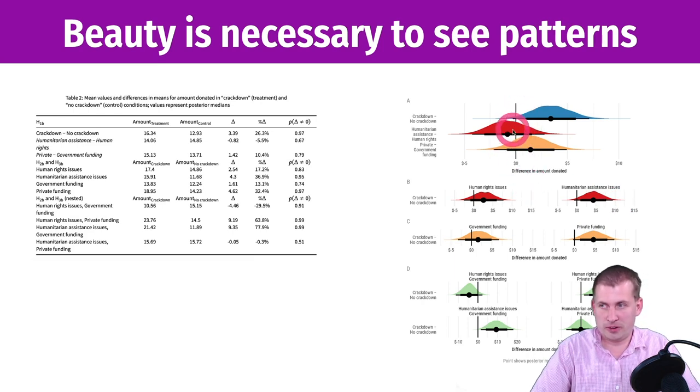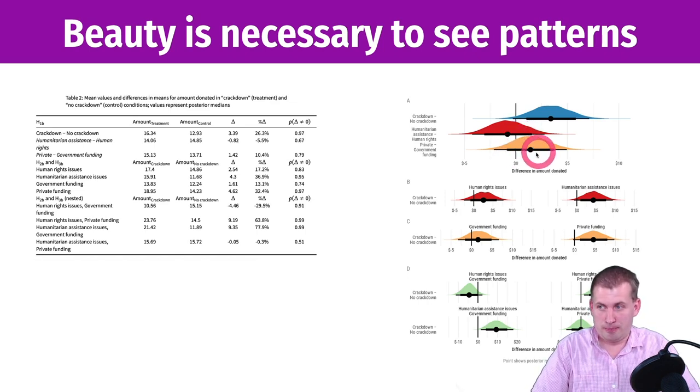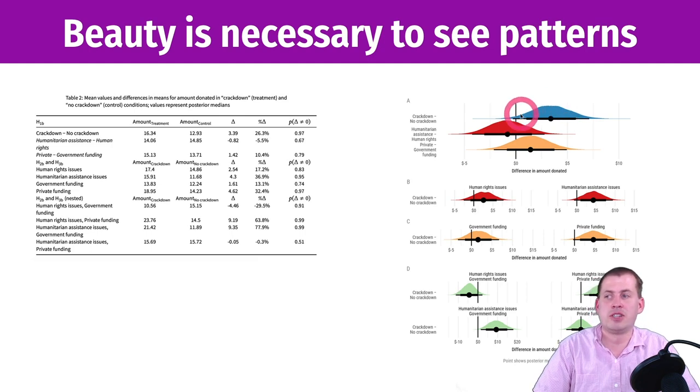You can see if there's any significant differences. If you look at this line at zero, any of these dots that are overlapping with that line are generally not significantly different from that line because it could be—if you look at this difference in the average amount donated, there are some situations where it could be zero. It's generally positive, but there's some where it's zero.